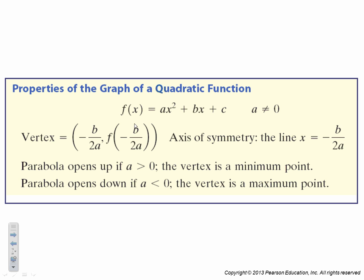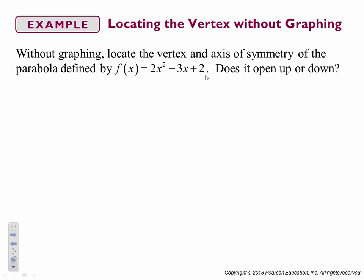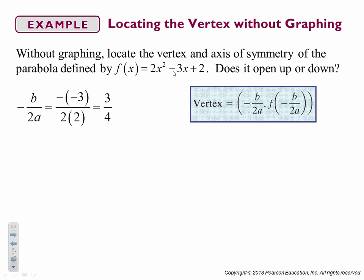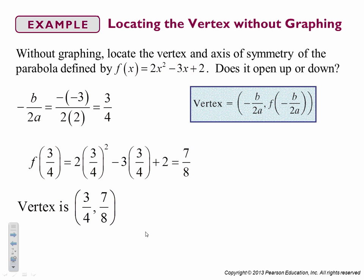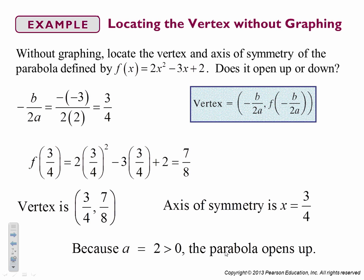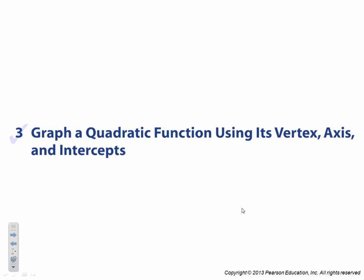So here we go, our vertex is at negative b over 2a, where a is the coefficient of the x squared, b is the coefficient of the x term. And our axis of symmetry is x equals negative b over 2a. So we're going to use the equations. We're going to plug in negative 3 for b, 2 for a, and we find that our x coordinate for our vertex is 3 fourths. We're going to plug 3 fourths into our function to find that our y coordinate of our vertex is 7 eighths. So then our axis of symmetry has to be x equals 3 fourths. And because our a value is positive, our parabola opens up.